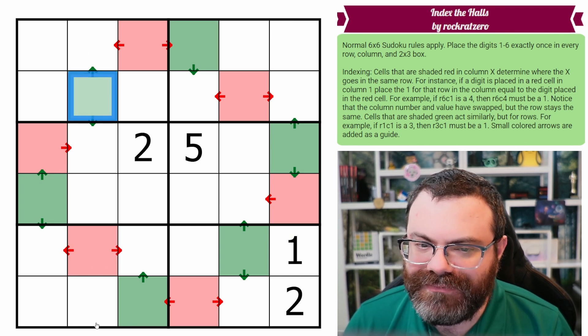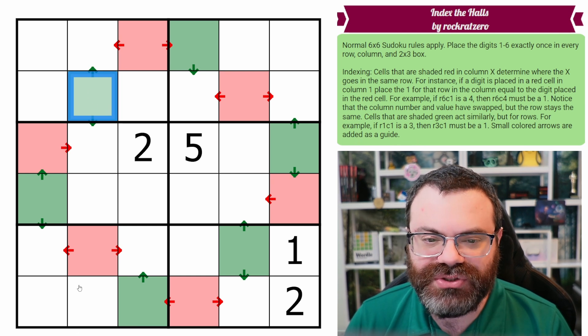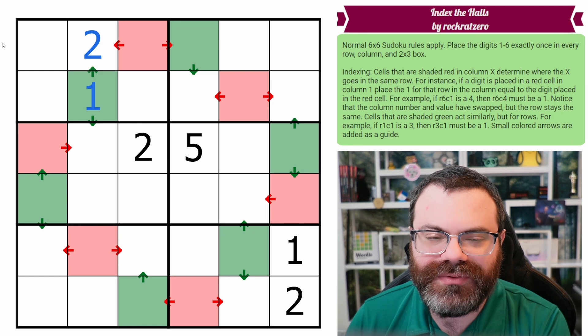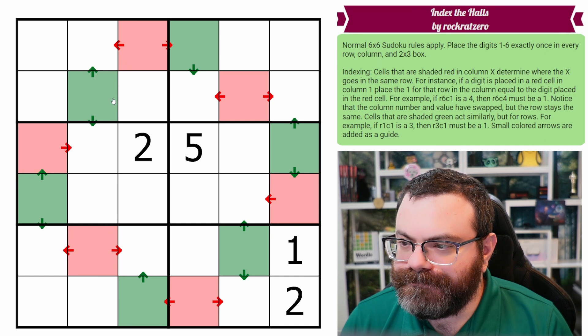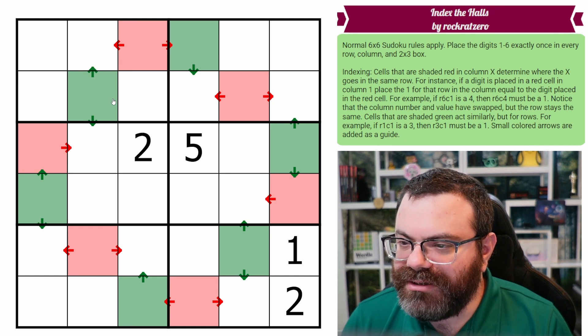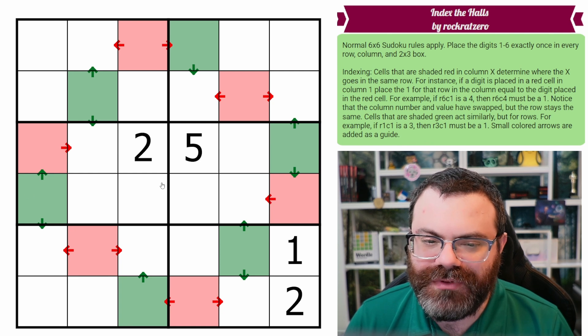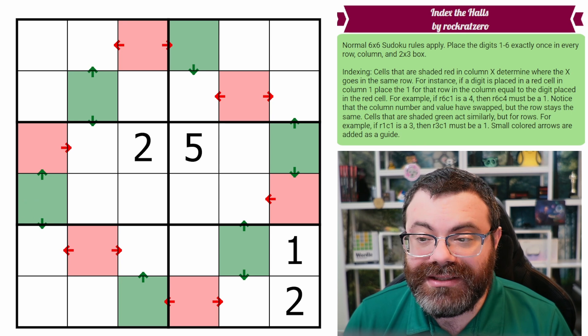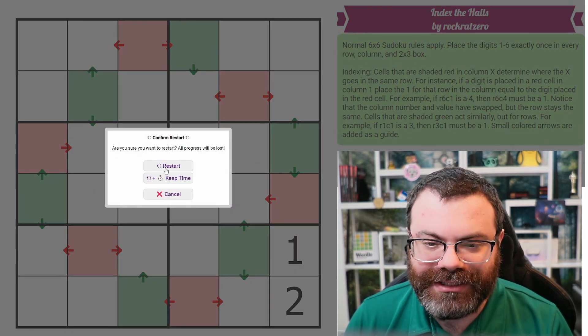And then green is the same, but swap row and column. So here we're going to be placing the 2 in the column. So if this was a 1, then we would put a 2 here because 2 would go in column 1. Small colored arrows are added as a guide. So these little arrows here are just to remind you which way red and green go. There's a link in the description if you'd like to try the puzzle yourself. And I'm going to get started right now.